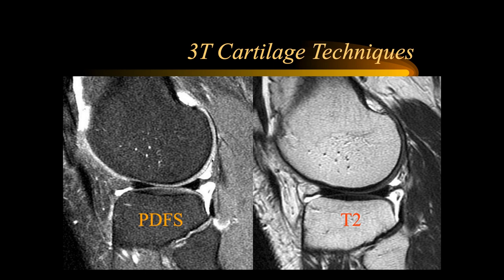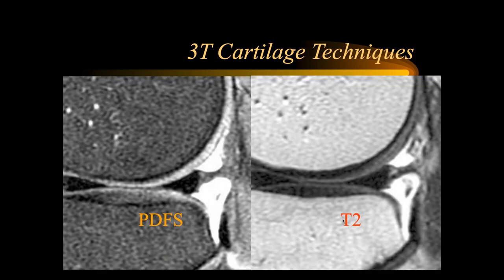Techniques for looking at cartilage: PD fat sat is used routinely, and T2 is preferred because you have lower signal intensity within the cartilage on T2 with bright adjacent fluid. T2 is overall a better indicator of structural abnormalities within articular cartilage than PD fat sat, because PD fat suppressed images often give a lot of increased signal intensity and you don't see the interface as well. We also like images that maintain fat signal intensity in all three planes because fat is such an important intrinsic contrast agent in the musculoskeletal system.